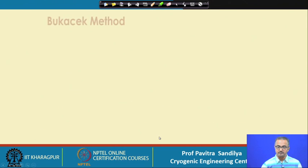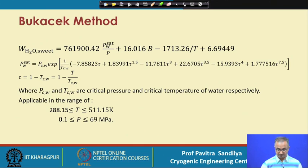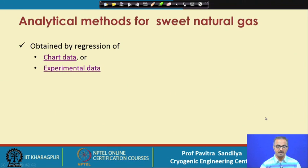The Bukacek method is also quite popular. In this method, the expressions are based on the reduced temperature with respect to the critical temperature of water. The parameter τ is defined as 1 minus T_rw, the reduced temperature with respect to the critical temperature of water. This method uses only the critical temperature and pressure of water, and its range of validity for temperature and pressure is specified for the Bukacek method.